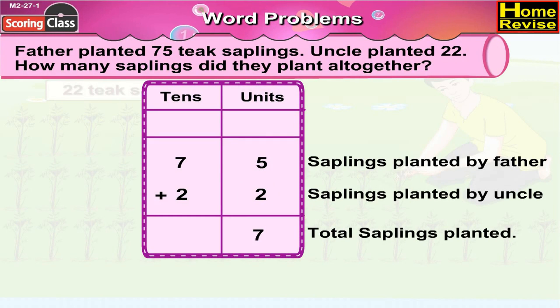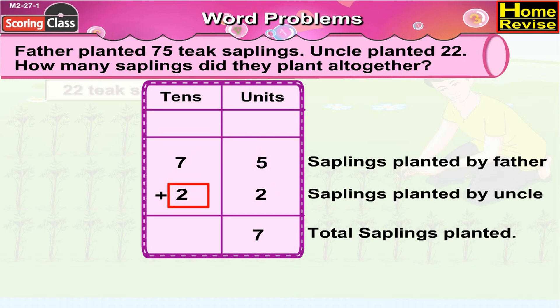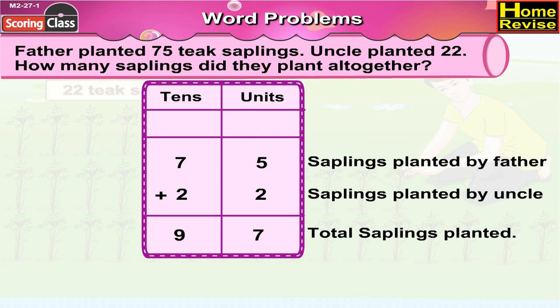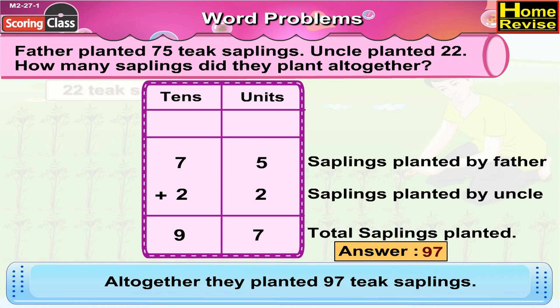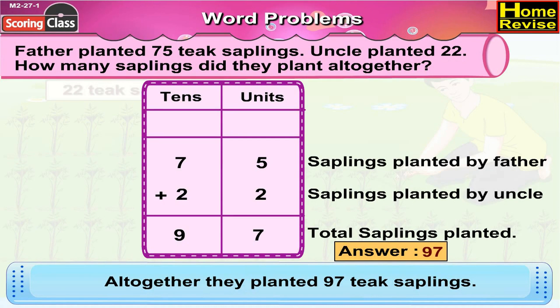In the tens column, 7 plus 2 is 9. So altogether they planted 97 teak saplings.